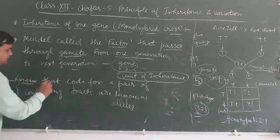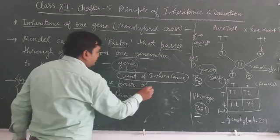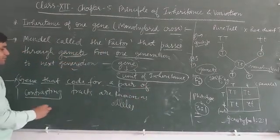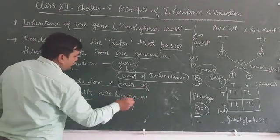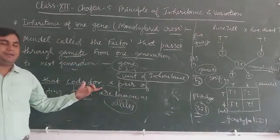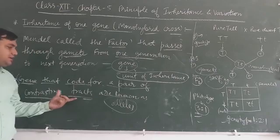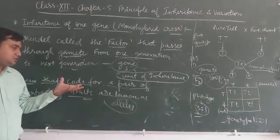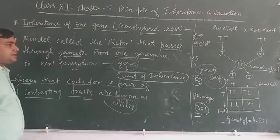Gene that codes for a pair, gene that codes for a contrasting pair of traits are known as alleles. Gene that codes for a pair, gene that codes for a contrasting trait are called alleles.